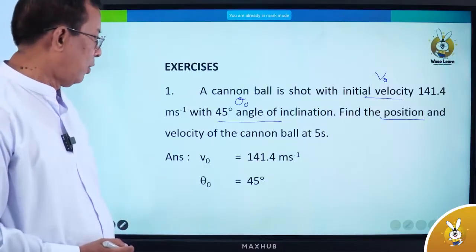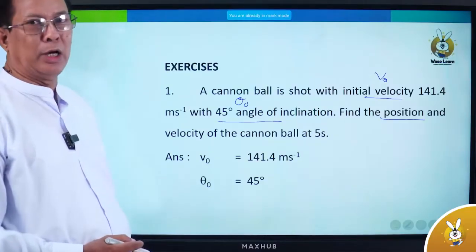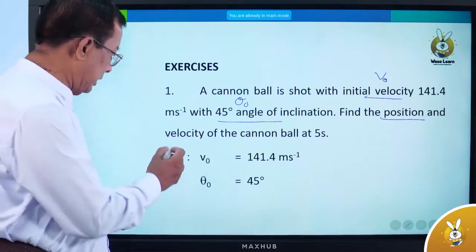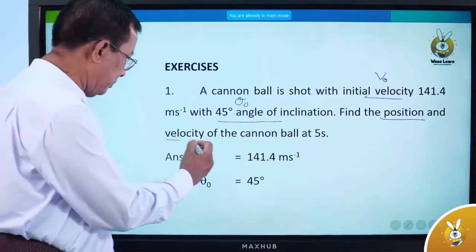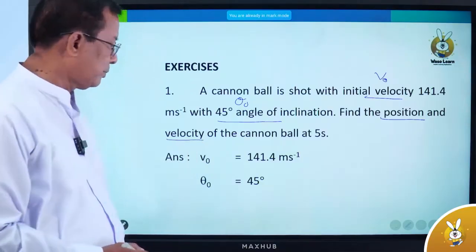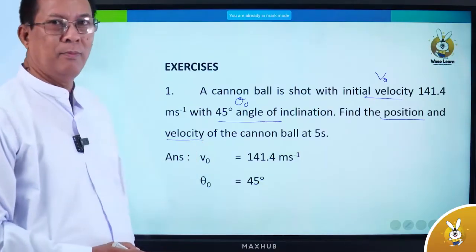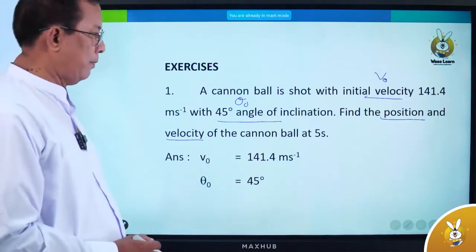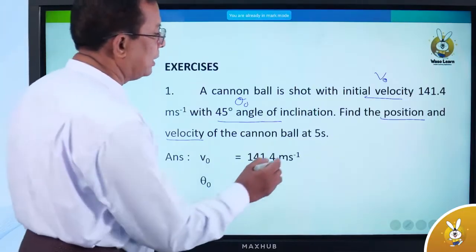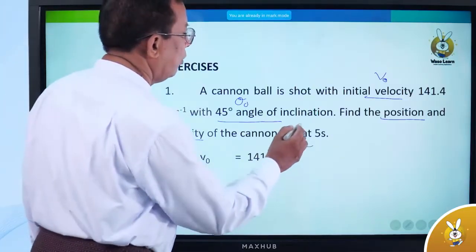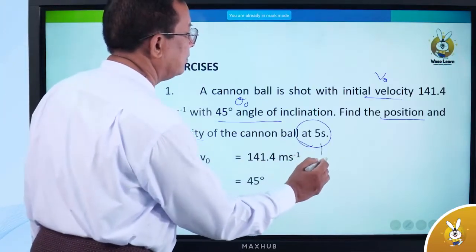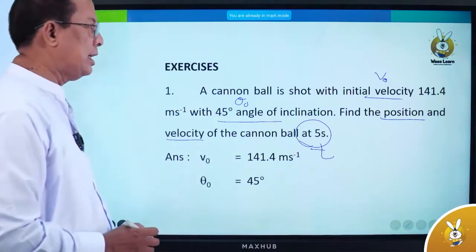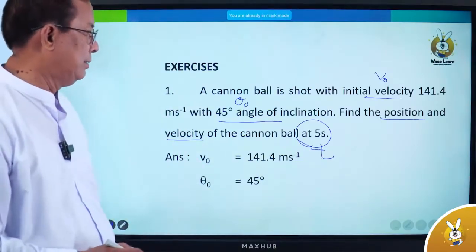And the velocity of the cannonball — the velocity at 5 seconds. We are going to find the velocity at 5 seconds.